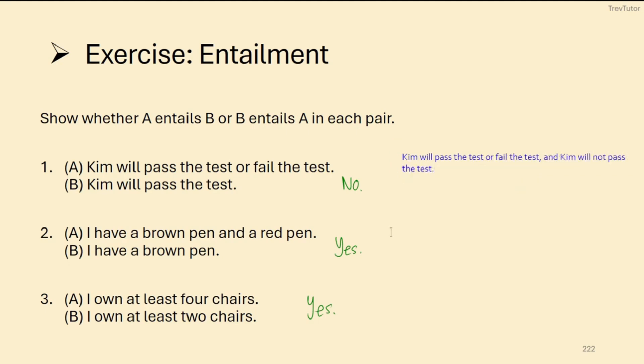If we take a look at this sentence, it's not a contradiction. Kim will pass the test or fail the test, but Kim will not pass the test. That would imply that she's going to fail it. So this is totally fine, and because it's totally fine, we're not looking at entailment.